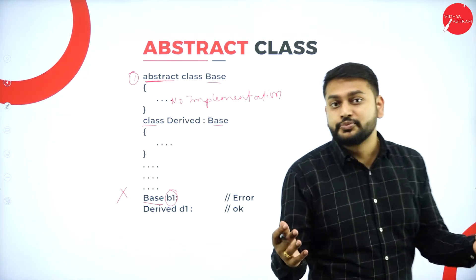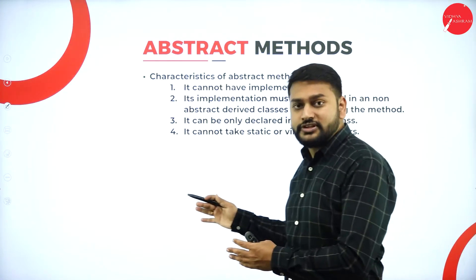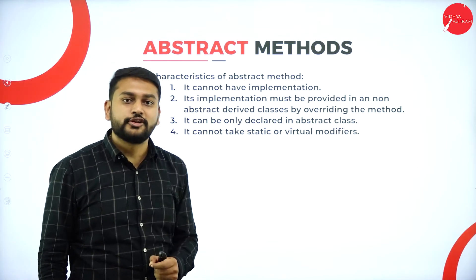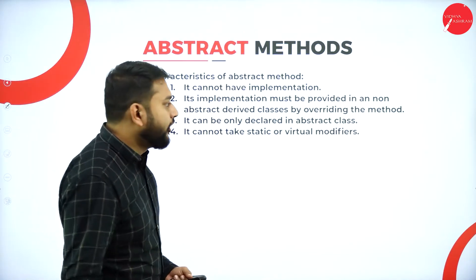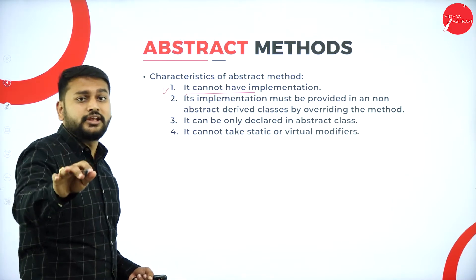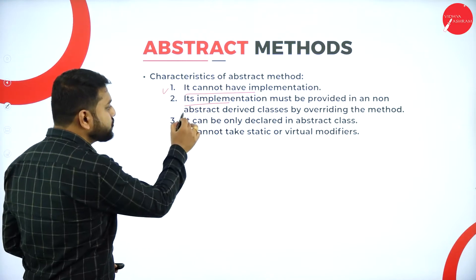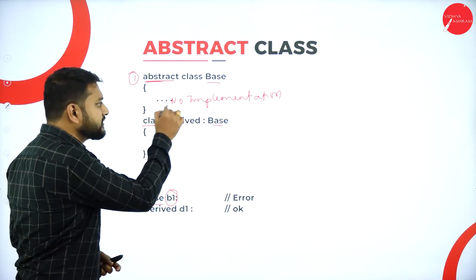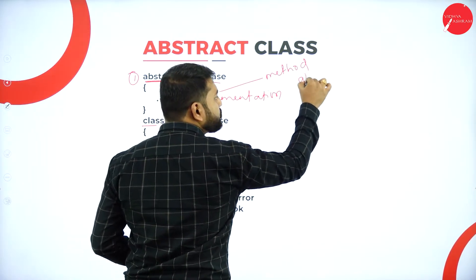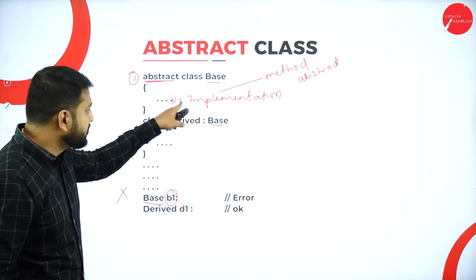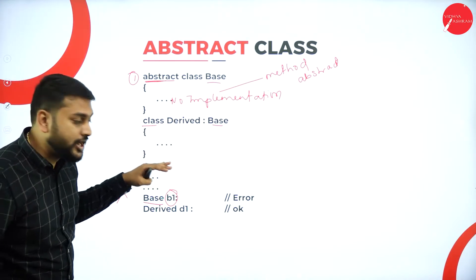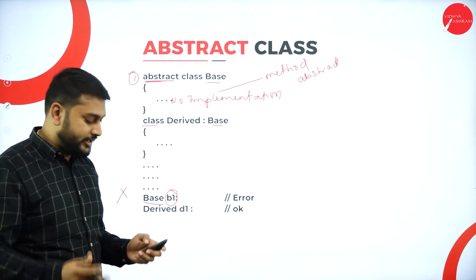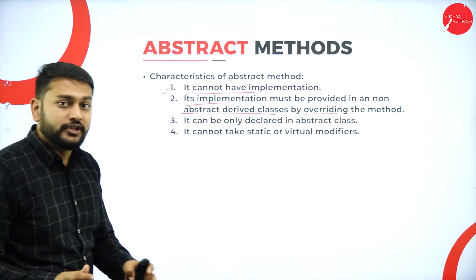Can I also make a method abstract? Yes, you can make any method abstract. First, there will be no implementation in that method. Second, its implementation must be provided in a non-abstract derived class by overriding the method. So if you have an abstract method in the abstract class with no implementation, you must implement it in the non-abstract derived class using the keyword override.